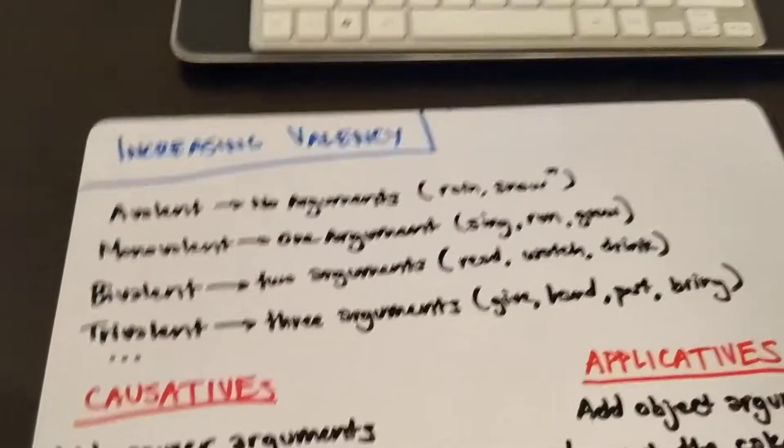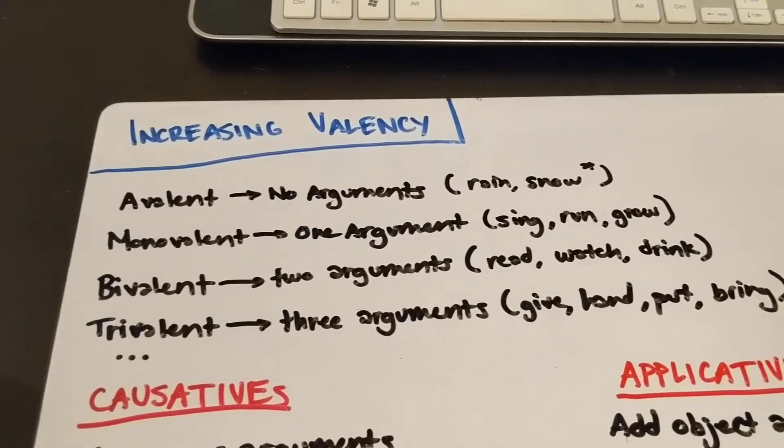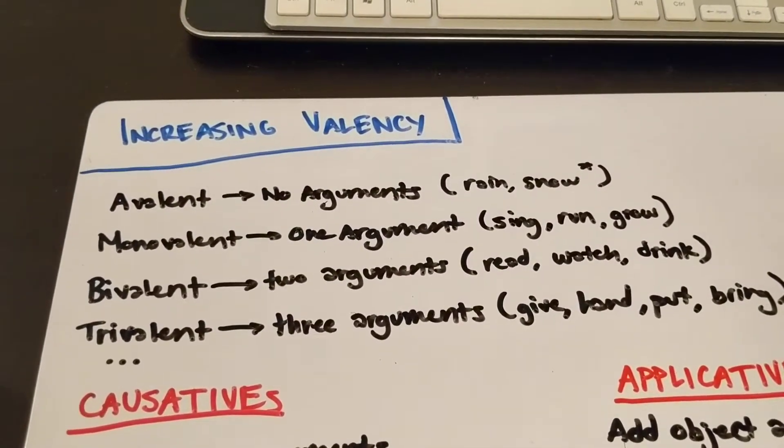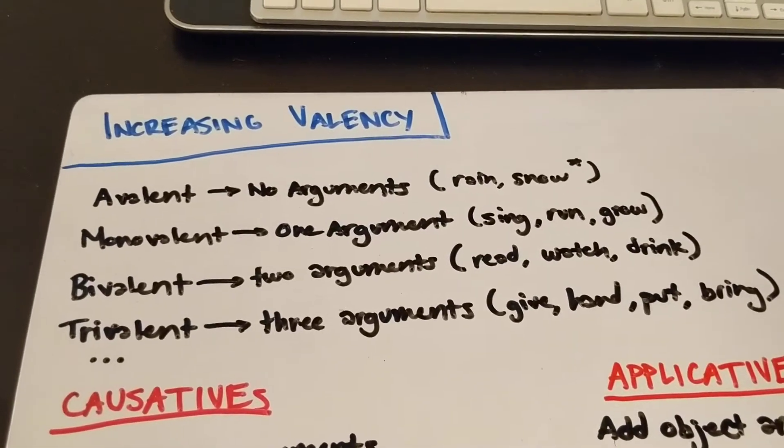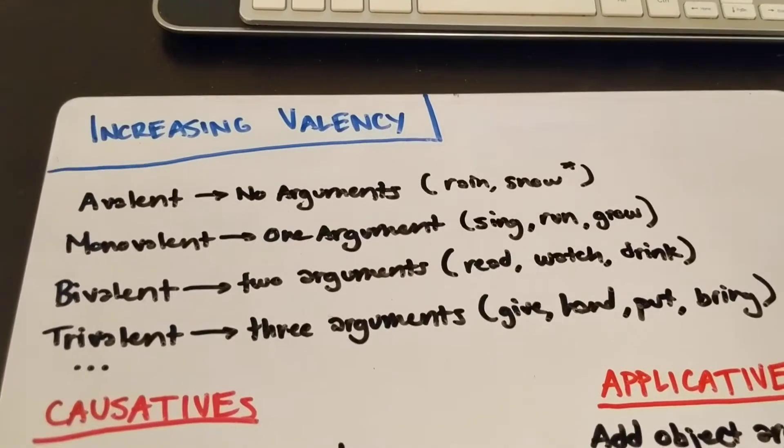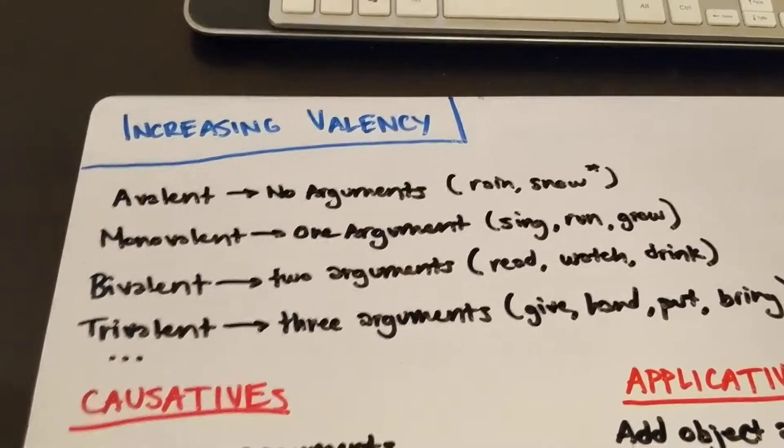Now there are two ways that we can take a verb and morphologically or otherwise increase its valency, right? There are two main ways that we can add arguments to verbs.